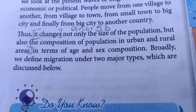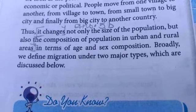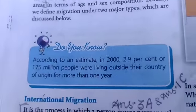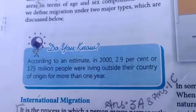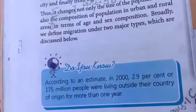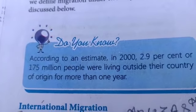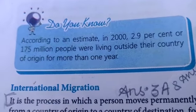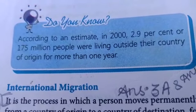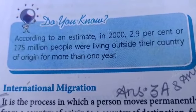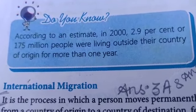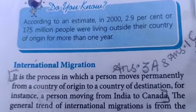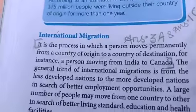Broadly we define migration under two major types, which are discussed below. Before we go to international migration, let us read the 'Do You Know' box. According to an estimate in the year 2000, 2.9 percent — that is 175 million people — were living outside their country of origin for more than one year. This is all due to migration.